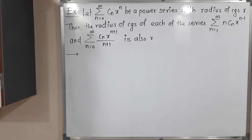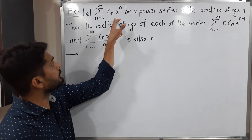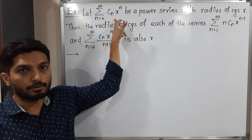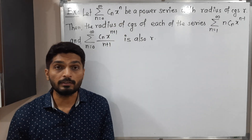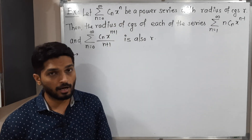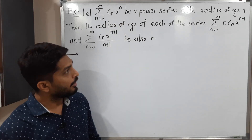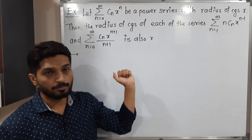Hi everyone, let us discuss this example. So here we have a power series summation Cn x raised to n. They have given it has radius of convergence r. After that they have given two more series.